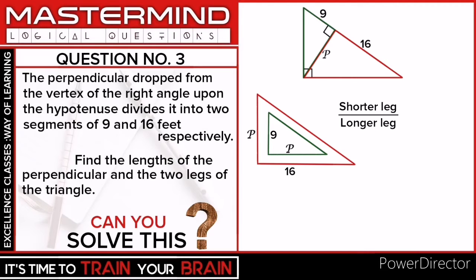For the green triangle, the shorter leg is 9 and the longer leg is p, so we have 9 over p. For the red triangle, the shorter leg is p and the longer leg is 16, so we have p over 16. We can set these two ratios equal to each other.